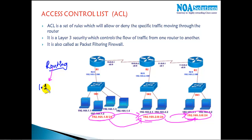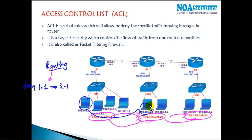Now with ACL, let's say I want a specific user 1.1 to not communicate with 2.1 — I want to deny the traffic so 1.1 should not go to 2.1, but 1.1 can communicate with other devices. I want to deny only that specific traffic.